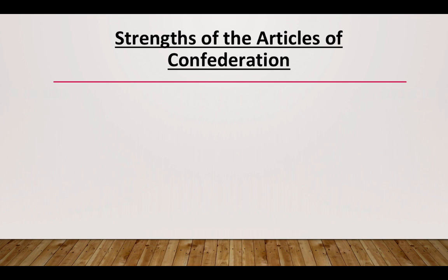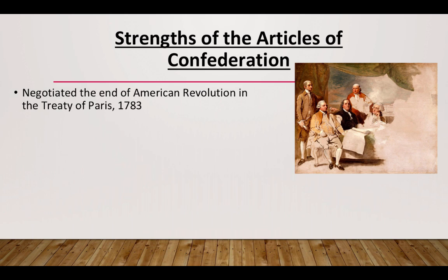Before we focus on the weaknesses of the Articles of Confederation, we do have to know that it does come with some strengths — things we took from the Articles before the new Constitution was created. First of all, it was the actual first form of independent government for the United States, and it helped to negotiate the end of the American Revolution and really gained our independence.